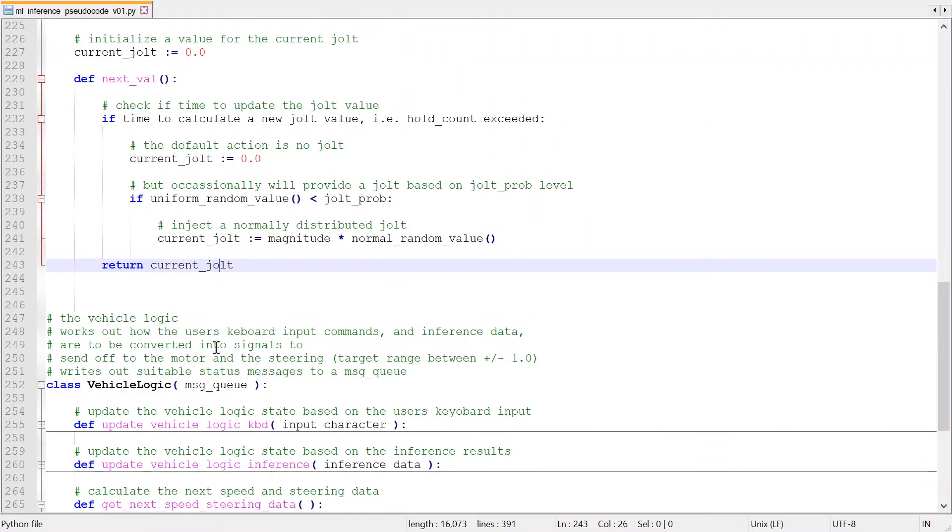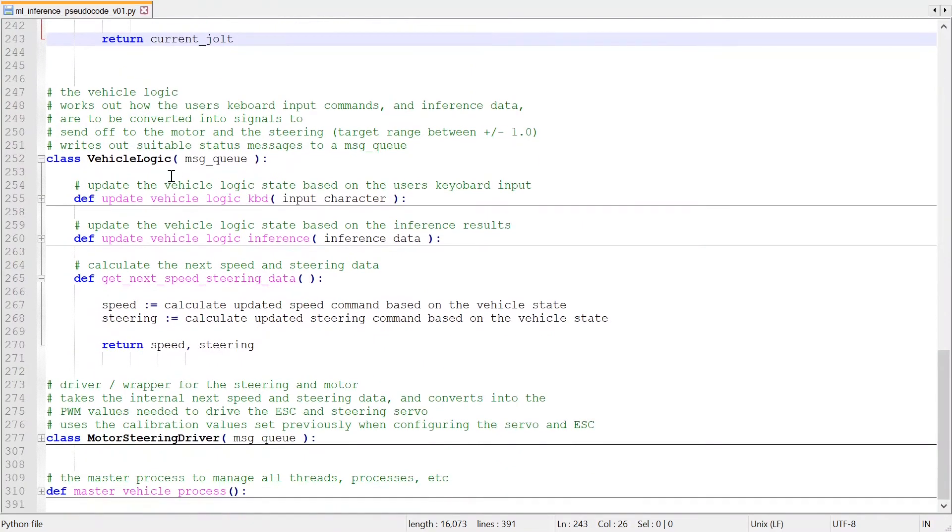The random steering jolt class gets instantiated in the vehicle logic class. And gets called within the getNextSpeedSteeringData method. So they are the main changes needed in the software.